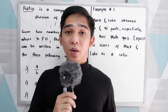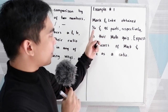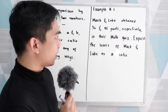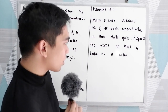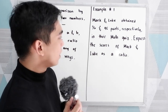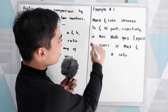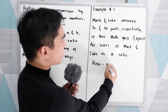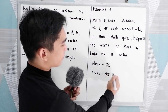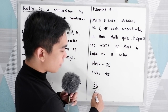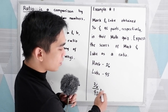Let's have example number one. Mark and Luke obtained 36 and 45 points respectively in their math quiz. Express the scores of Mark and Luke as a ratio. So Mark scored 36 while Luke scored 45, giving us 36 over 45.